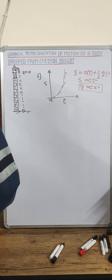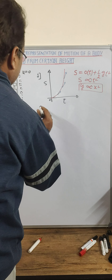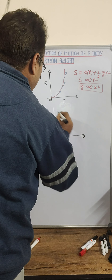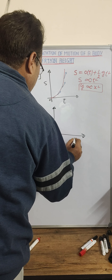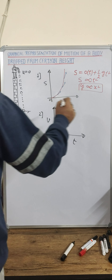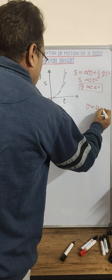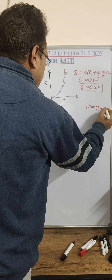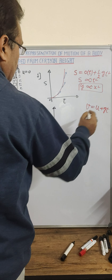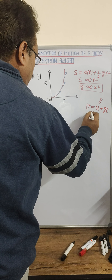Now let us discuss the velocity-time graph. Looking at the equation of motion, we write v = u + gt. G will be positive because the body is dropped. Since u = 0, v is proportional to t.